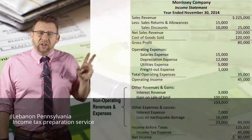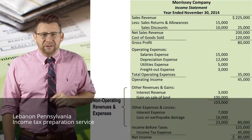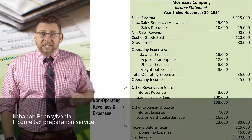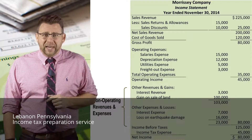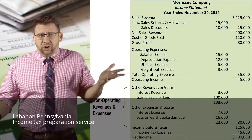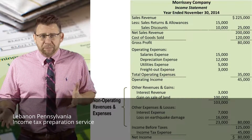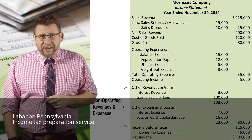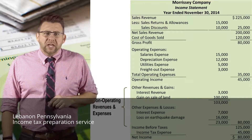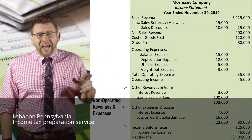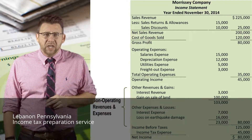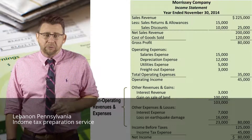The next section reports non-operating revenues and expenses. These items are either one-time amounts, like gain on sale of land or loss from earthquake damage, or items not part of central operations, like interest revenue earned by making a loan or interest expense incurred by financing assets with debt. This section is sometimes known as the 'other section.' Other revenues and gains are added to operating income, and other expenses and losses are deducted, giving us a subtotal called income before taxes.